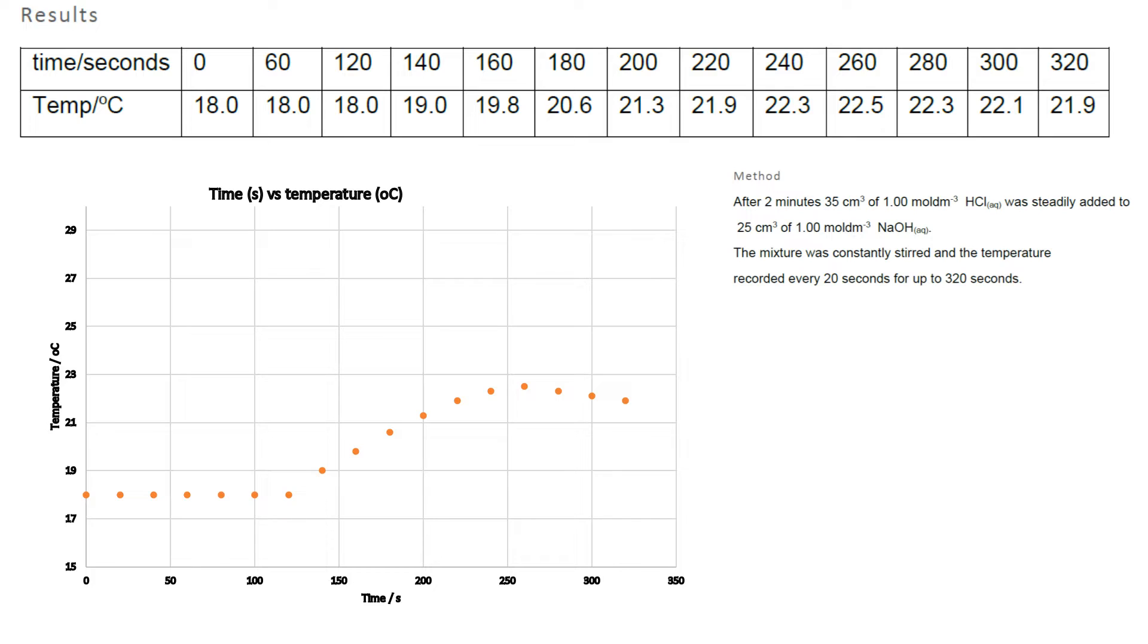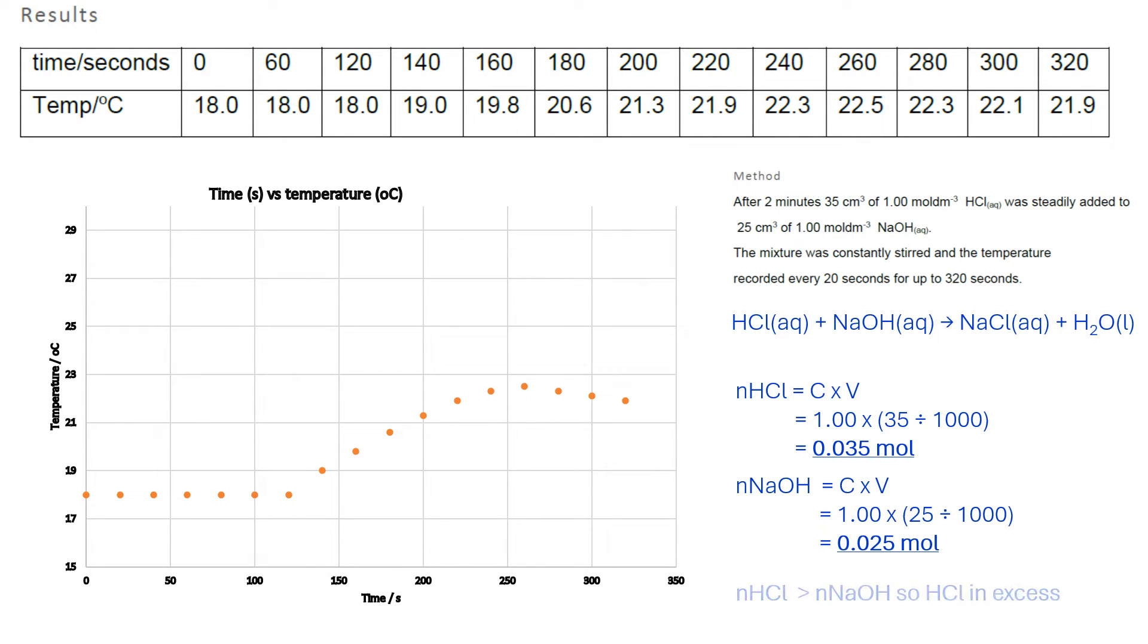When you put it through a graph in Excel, this is what it gives you. First, I'm going to work out the moles of everything. The number of moles of HCl is 0.035 moles and the number of moles of NaOH is 0.025 moles. Clearly, the HCl is in excess.